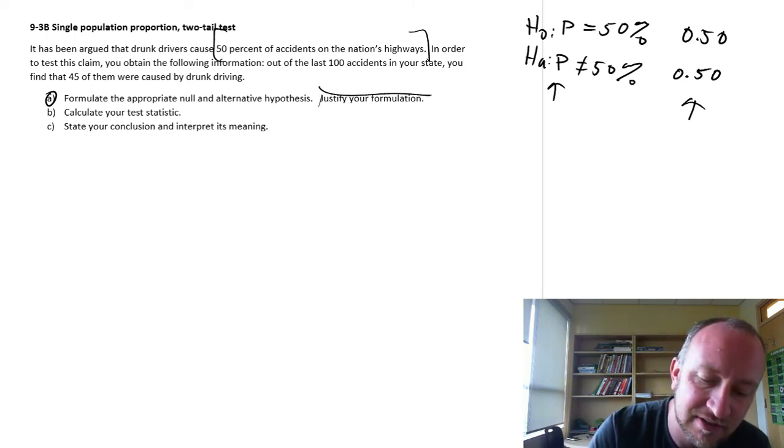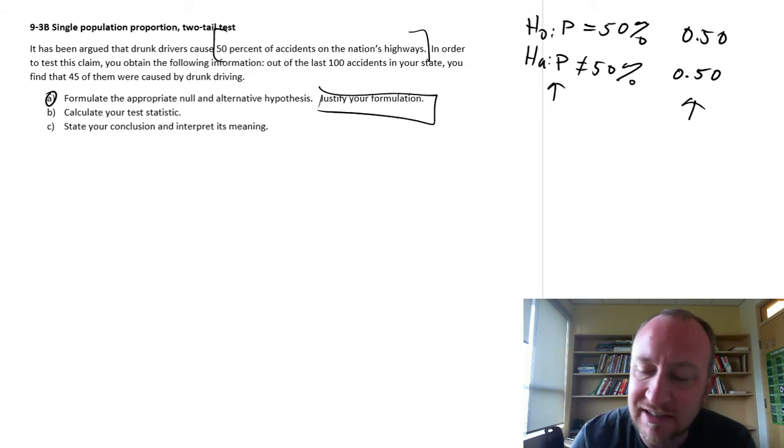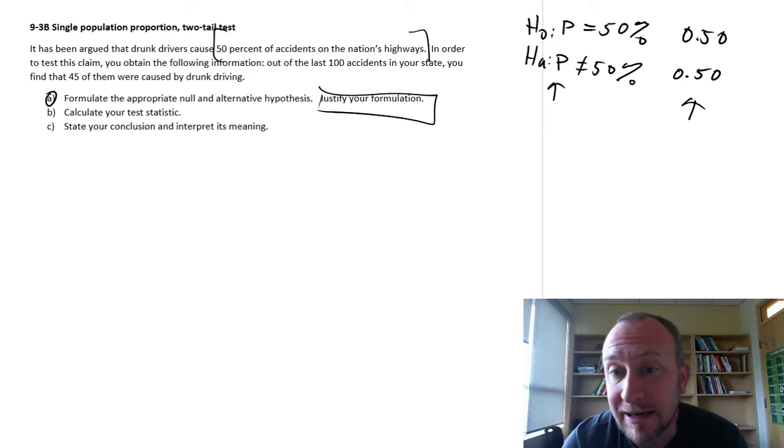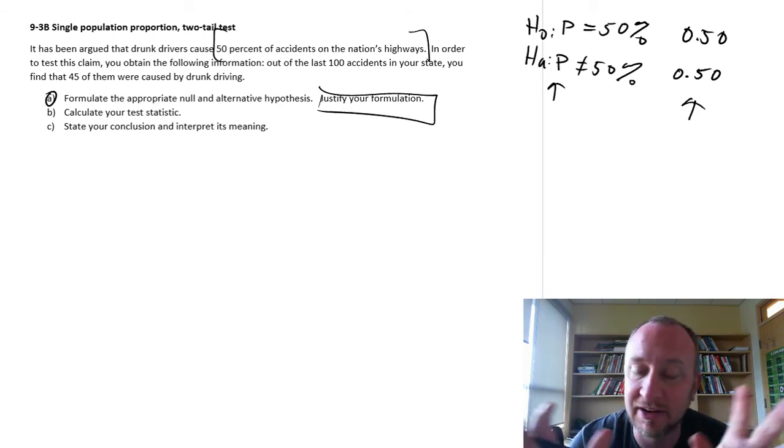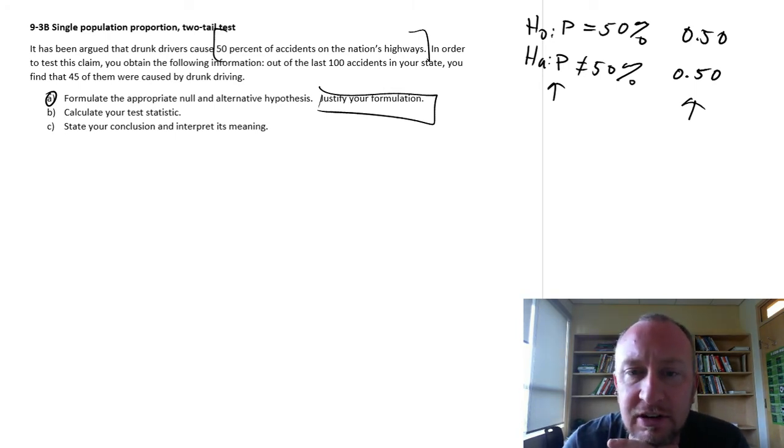So here I've formulated this in a way that if the evidence supports the null hypothesis, then that supports the claim. That we have evidence to show that, oh yeah, 50% of the accidents are caused by drunk drivers. If the evidence supports the alternative hypothesis, then that means that no, I cannot support the claim. The evidence doesn't support the claim that half of those accidents are caused by drivers.